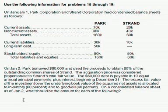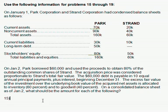On a consolidated balance sheet as of January 2nd, what should be the amount for each of the following? Problem number 15 asks: what are the consolidated current assets?